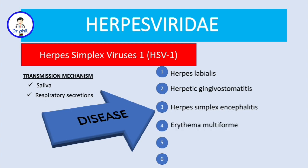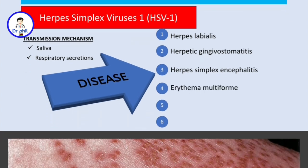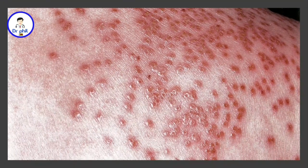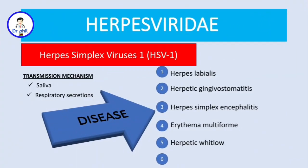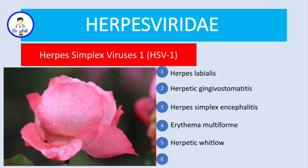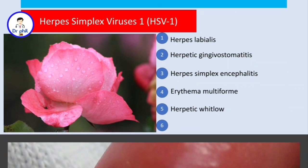Erythema multiforme — it looks like this — is actually a hypersensitivity reaction. The next condition is herpetic whitlow. Herpetic whitlow appears like a dew drop on a rose petal, and it looks like this.